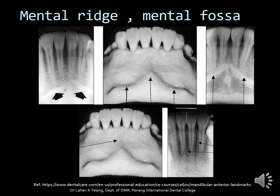The mental ridge is a dense radiopaque structure visible as radio-opaque lines indicating the shape of the bone. The mental fossa is the radiolucent area seen in this radiograph. You can also see the lingual foramen in this radiograph.